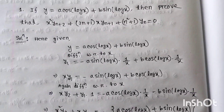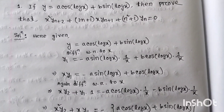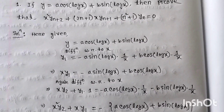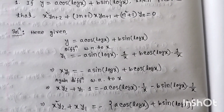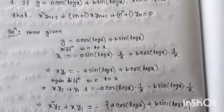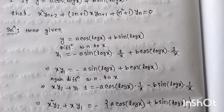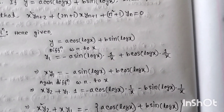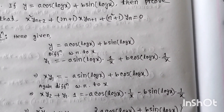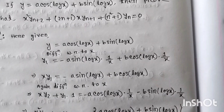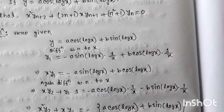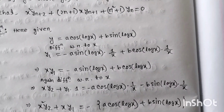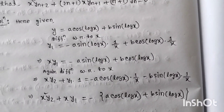So we are working on number one. Here y = a·cos(log x) + b·sin(log x). Since we need y_(n+2), we will take the derivative. Taking the first derivative: y1 = derivative of cos(log x) gives -sin(log x), and since the derivative of log x is 1/x, and similarly for b·sin(log x) the derivative of sin(log x) is cos(log x) times 1/x.